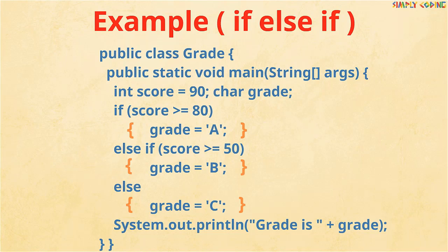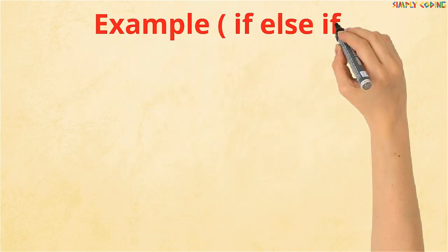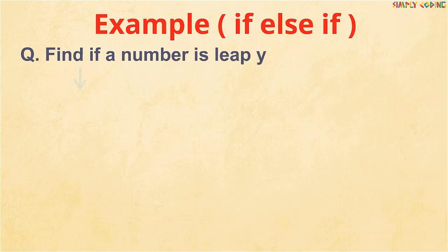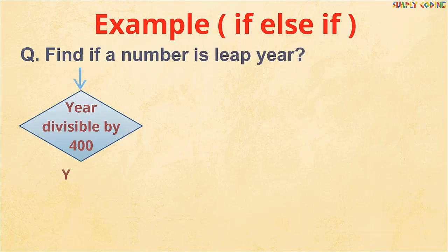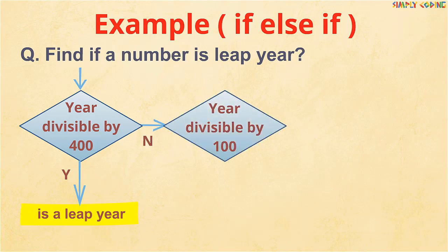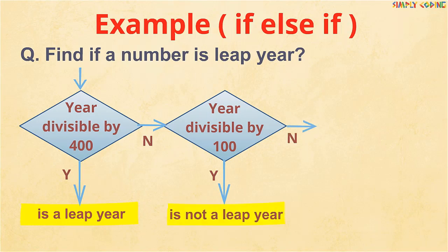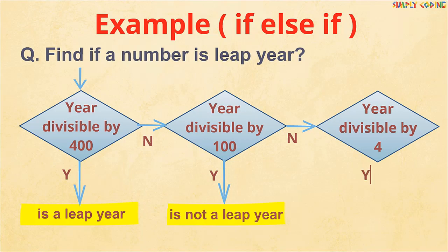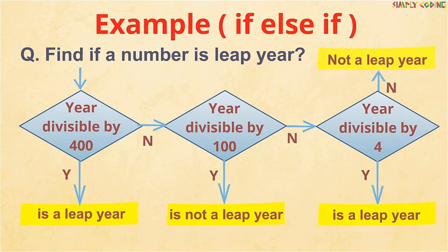Let's look at some more examples. First, find if a number is a leap year. The logic is: if a year is divisible by 400 then it is a leap year; else if the year is divisible by 100 then it is not a leap year; else if the year is divisible by 4 then it is a leap year; and in all other cases it's not a leap year.